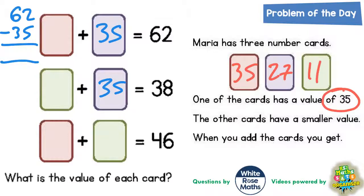2 take away 5 we couldn't do, so borrow. 12 take away 5 is 7, and 5 take away 3 is 2. So the red one would have to have been 27.